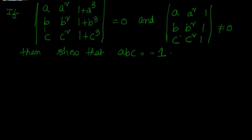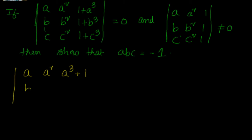Let's go ahead and do that. What we will do first is write the matrix as (A, A², A³+1), (B, B², B³+1), (C, C², C³+1).